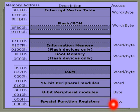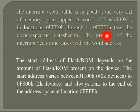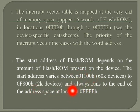The special function registers support only byte operations. The interrupt vector table is mapped from 0FF0h through 0FFEh. Interrupt priority increases as the word address increases. The start address of flash or ROM depends on how much flash or ROM is present on the device; addresses typically vary from 01100h to 0F800h, and it always ends at address 0FFFFh.